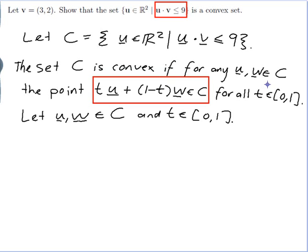So I should dot it with v and see what I get. [tu + (1-t)w] dot v and figure out what that is. Well the dot product can be expanded like ordinary brackets.